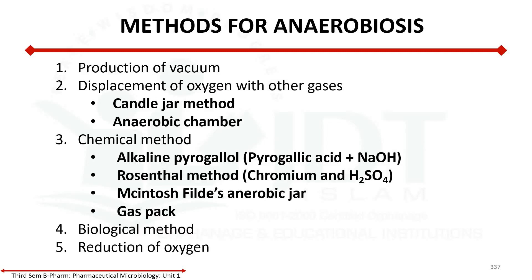Coming to the methods of anaerobiosis — anaerobic culture methods — there are five methods. First is production of vacuum. Second is displacement of oxygen with other gases, which includes the candle jar method and anaerobic chambers. Third is chemical methods: alkaline pyrogallol, Rosenthal, McIntosh-Fildes jar, and gas packs. Fourth is biological methods. Fifth is reduction of oxygen using reducing agents.